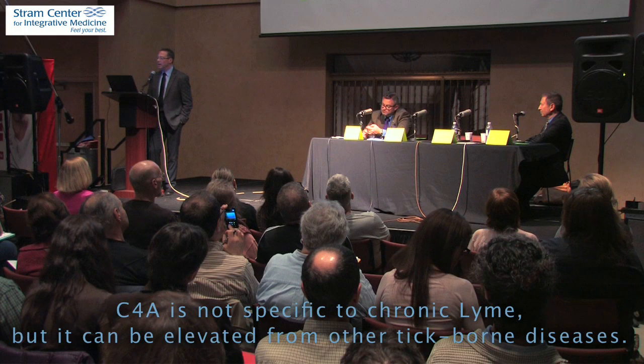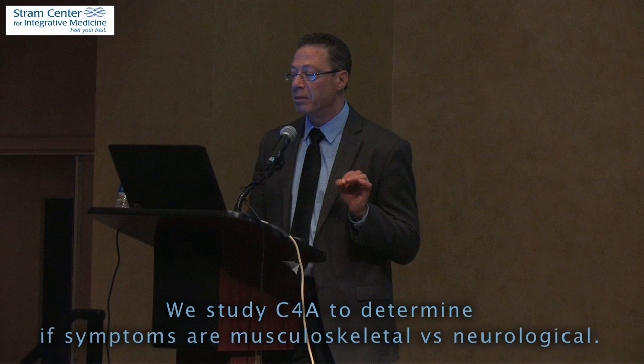The C4A is the complement system. It helps the antibodies and other immune cells — the phagocytes, which essentially eat things — to clear pathogens from the body. The C4A is not specific to chronic Lyme but can be elevated in many types of infection, including other tick-borne diseases. C4A levels are also elevated in HIV-AIDS and systemic lupus, but not in healthy controls. The C4A marker for chronic Lyme disease has been shown to be elevated in patients who suffer more from musculoskeletal symptoms versus those with neurological symptoms.